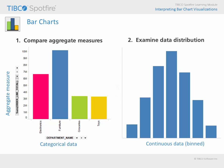Alternatively, bar charts may be configured like a histogram in order to examine data distribution by displaying bar height as a count of values. In this circumstance, the continuous measure is placed along the category axis and is often binned in an effort to gather data into groups based upon data ranges.